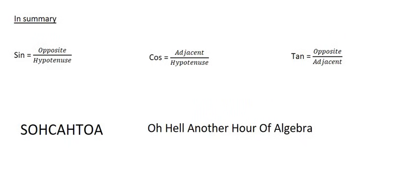And so in summary, sin is the opposite over the hypotenuse, cos is the adjacent over the hypotenuse, and tan is the opposite over the adjacent.